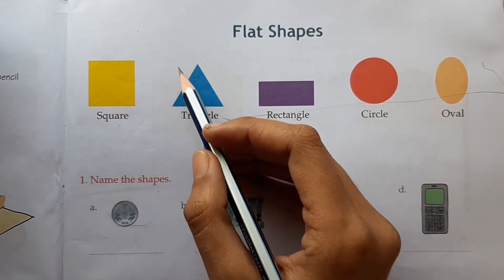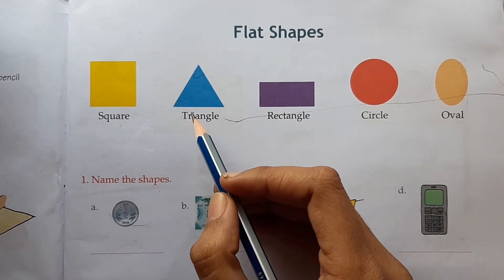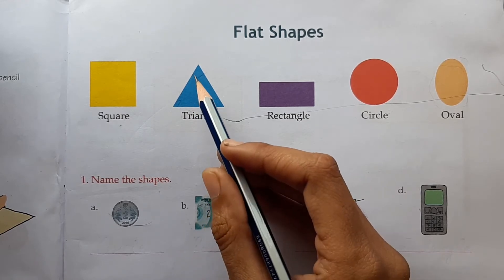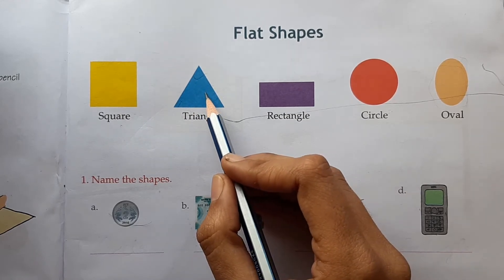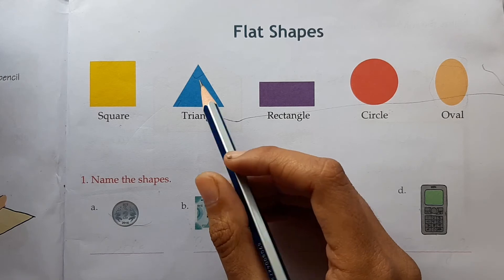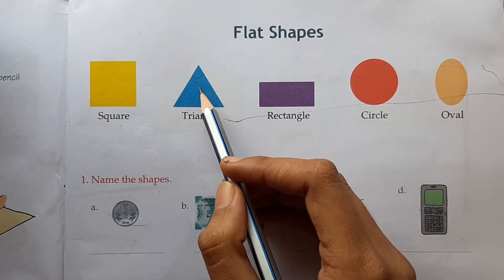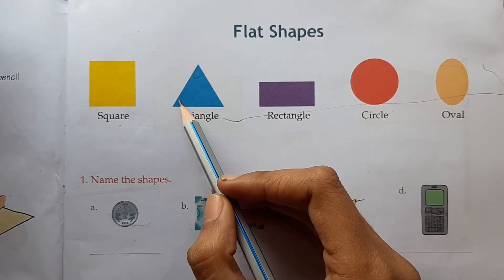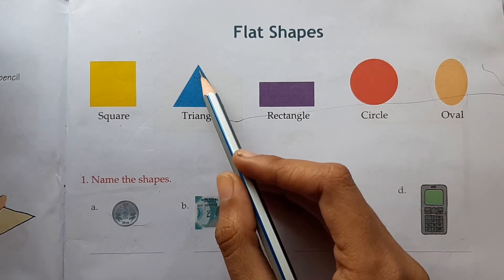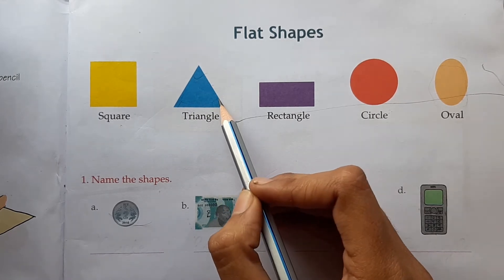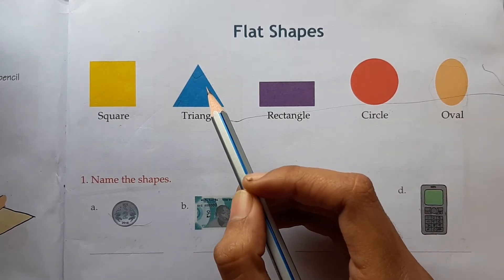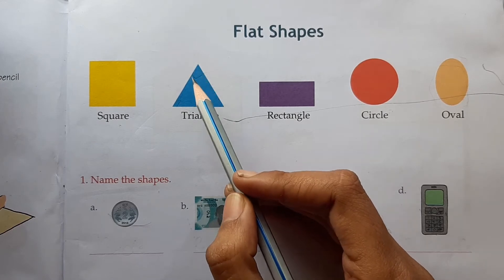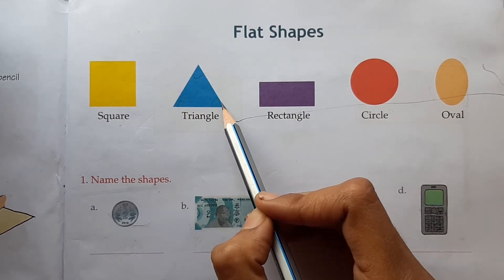Now our next shape is triangle. This is the shape of a triangle. A triangle has three sides — one, two and three. And it also has three corners — one, two and three.